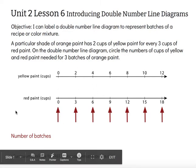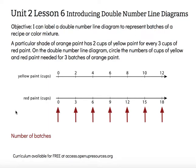So if I wanted to make no paint whatsoever, I would use zero cups of yellow paint and zero cups of red paint — that represents zero batches; I made nothing. If I wanted one batch, then I would use the original recipe: two cups of yellow paint and three cups of red paint. So that's one batch.